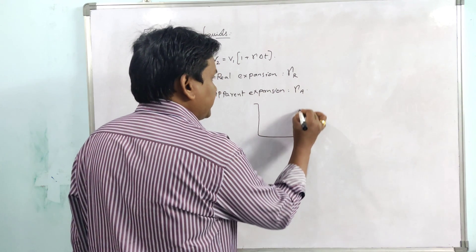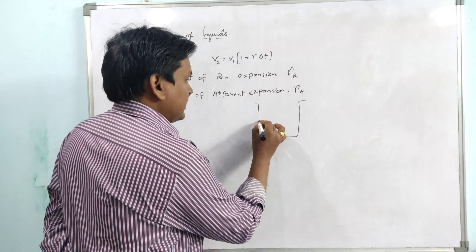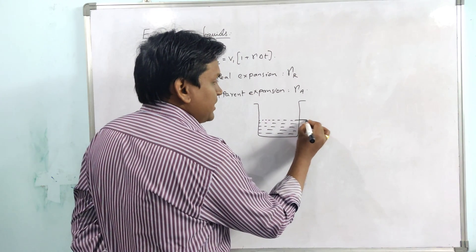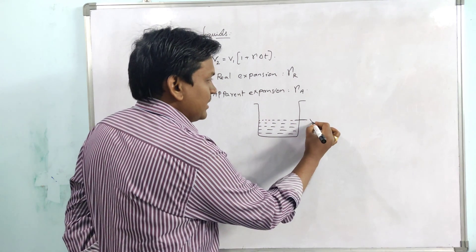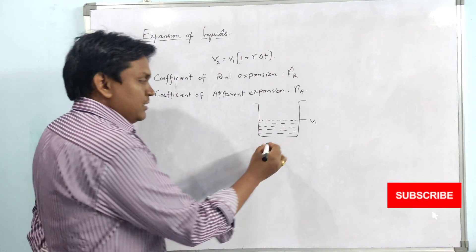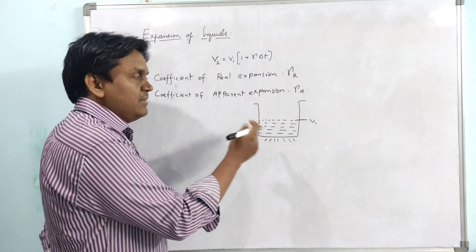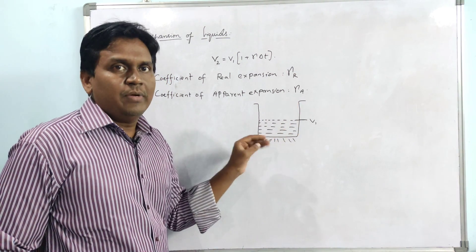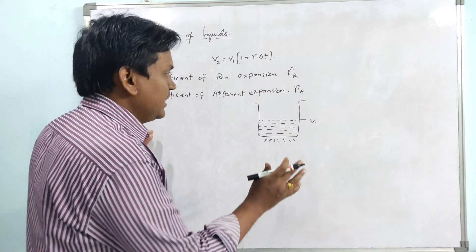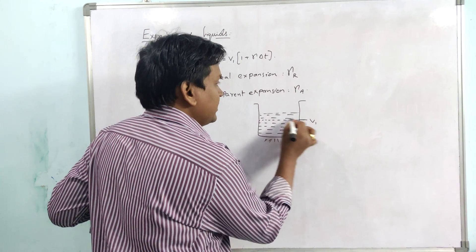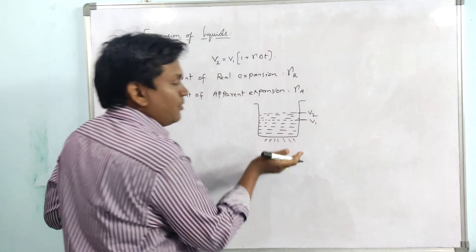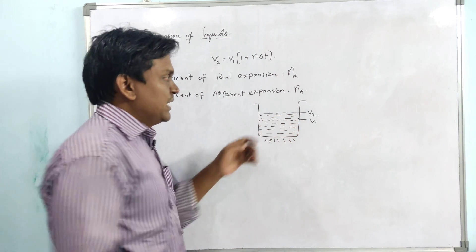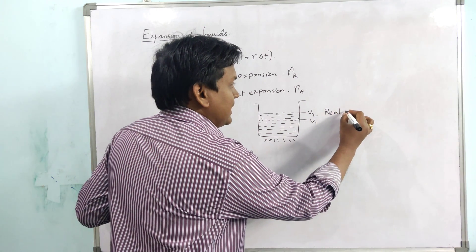As we heat all liquids in a vessel, consider a vessel containing some liquid. The original volume of the liquid is V1. If we consider that the vessel does not expand — there is no expansion of the vessel — then due to the heat there will be a rise in the level of the liquid, and the new volume becomes V2. This change from V1 to V2 is considered the real change in volume.